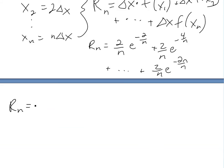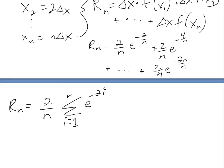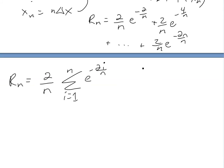If we write this in sigma notation, we can take out 2 over n because it's a constant everywhere. This is sigma notation with index initially at 1 up to n. We're going to get e to the negative 2i over n — because if i is 1, it's going to be negative 2 over n; if it's 2, negative 4 over n; and if it's n, we just put n in, giving us e to the negative 2n over n.